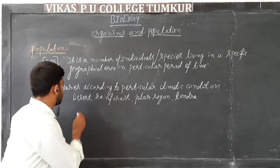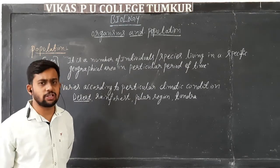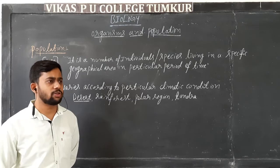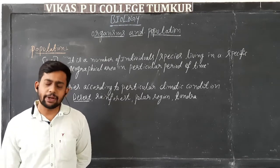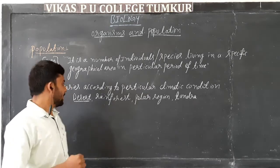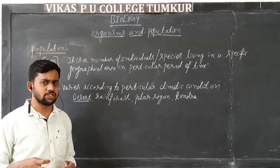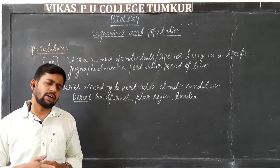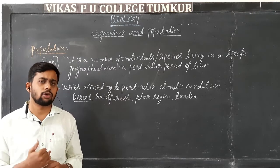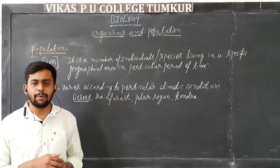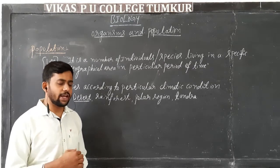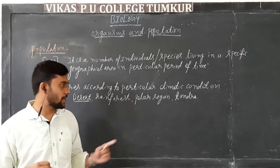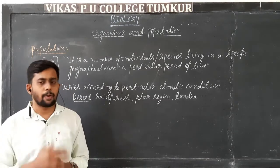In desert conditions, the population is at a minimum — there is a minimum population. There are a lot of difficult climate conditions. Compared to the rainforest, there is a lot of temperature variation. In this case, the population is less than the desert. The rainforest has wild plants and animals. In polar regions, where temperatures are very negative, the abiotic factor affects all the environment, and that region has very low population.